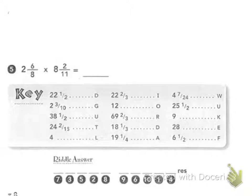I'm going to take a look at question number 5. We have 2 and 6 eighths and we're multiplying it by 8 and 2 elevenths. So there's a couple of different routes we can take. I see that 6 eighths reduces.